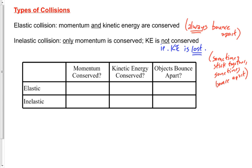Objects that stick together must be in an inelastic collision. Two cars hit and stick together — inelastic. You catch a ball and the ball and you become one object — inelastic. A skateboard comes one way, you run the other, you jump on and become one object — inelastic. Bounce a basketball on the ground — the basketball bounces up, they bounce apart, but it's still an inelastic collision. Two cars hit each other and bounce apart — still an inelastic collision.